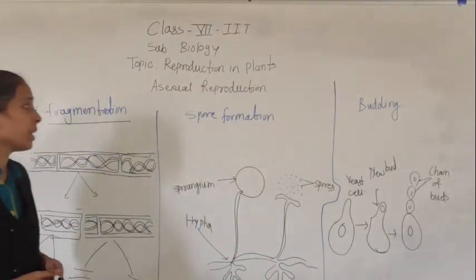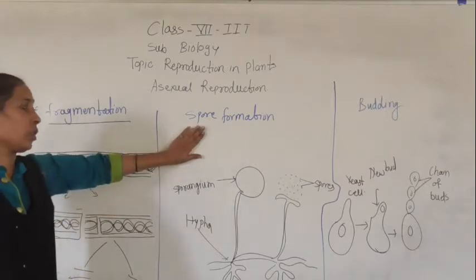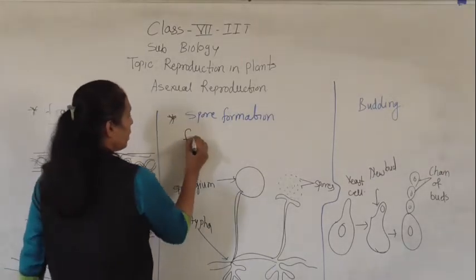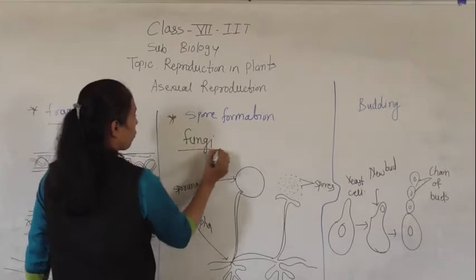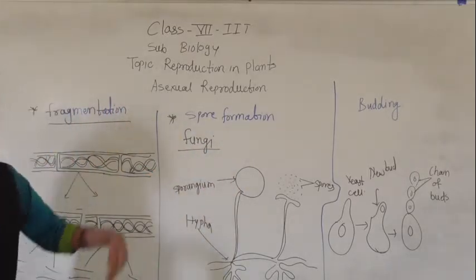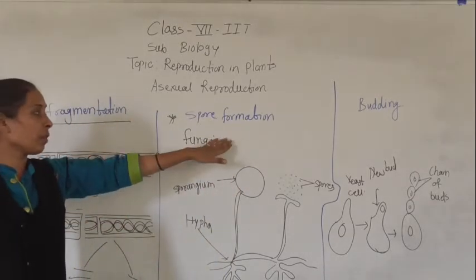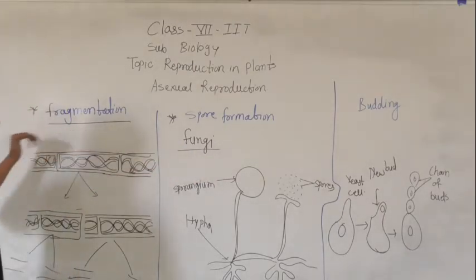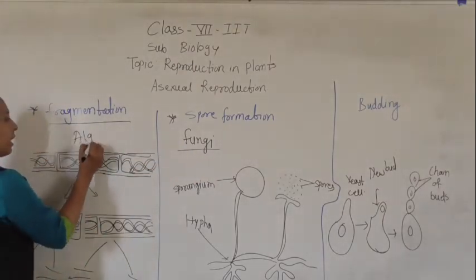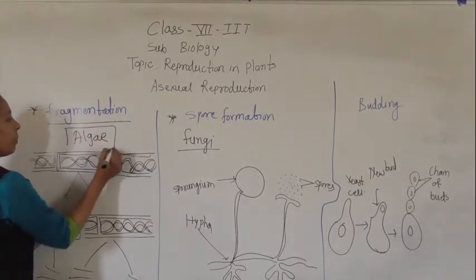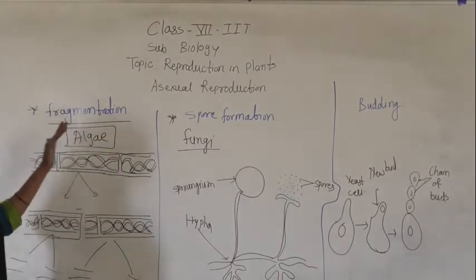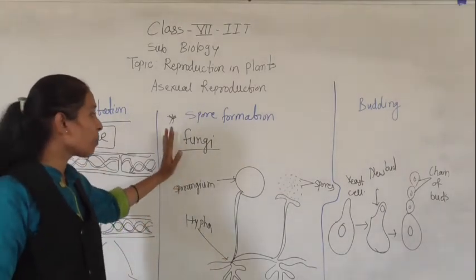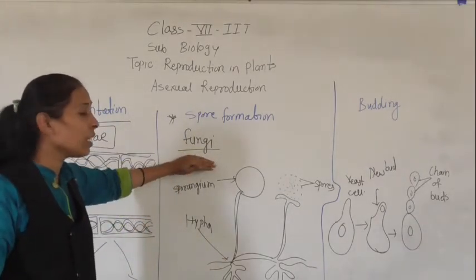Now we will discuss the next method of asexual reproduction — spore formation. Spore formation is shown by fungi. The organisms that reproduce with the help of spore formation are fungi, whereas algae reproduce with the help of fragmentation. Let's discuss spore formation, which is basically found in fungi.